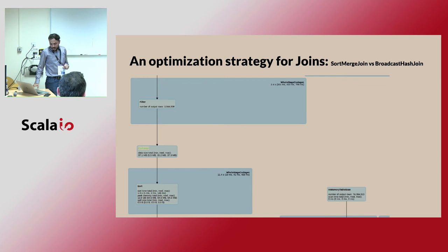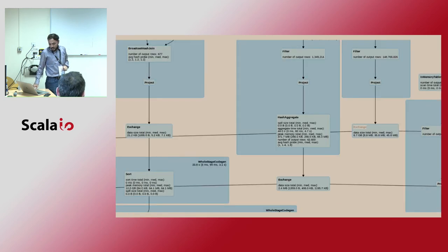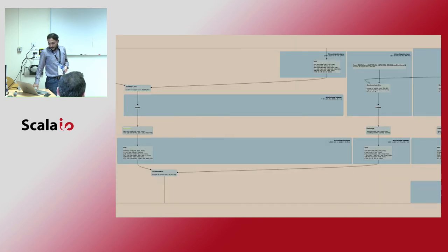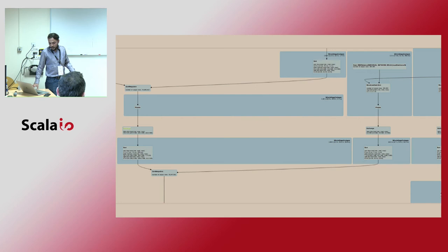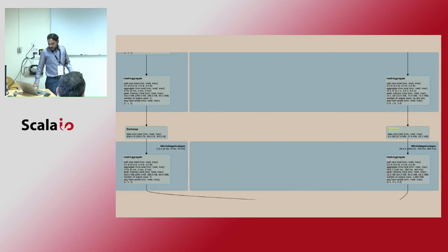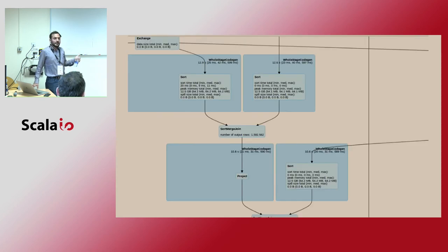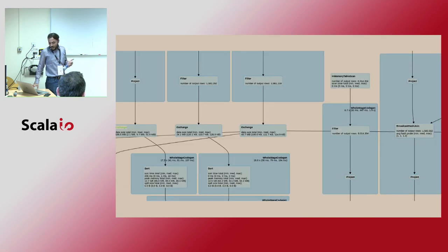In Spark UI, you can see how much data exchange (shuffle) is happening. For example, seeing 6.7 GB of shuffle means you should persist that DataFrame and avoid re-shuffling. In one case, 44 GB of shuffle was happening on each transformation across a long Spark job — making it critical to understand and minimize shuffle.